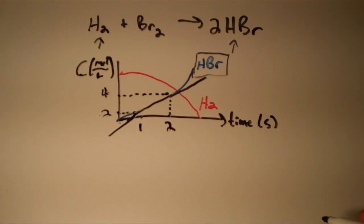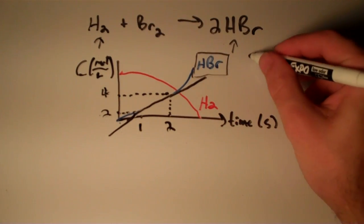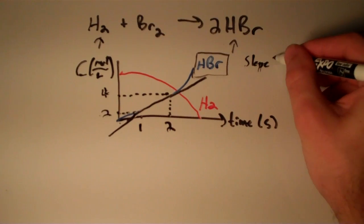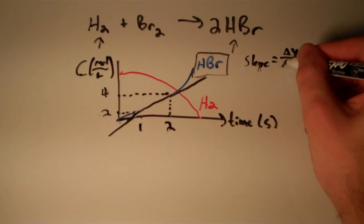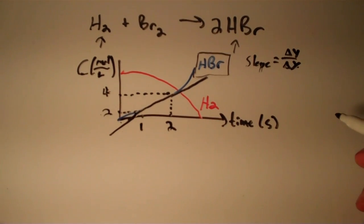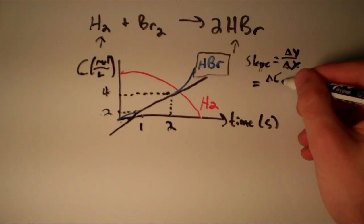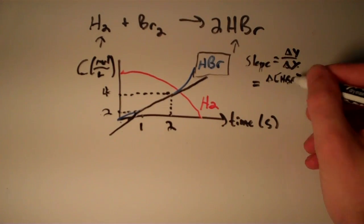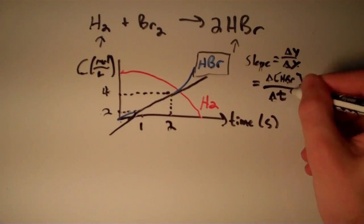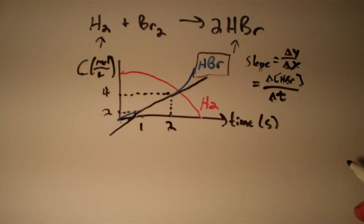To find the rate, all you do is you just find the slope between these two points. The slope of this line is simply going to be Δy over Δx, where y is the concentration and x is time. So that's really going to be delta concentration of HBr over delta t. We just found the rate of formation of HBr using the slope of the line between these two points.